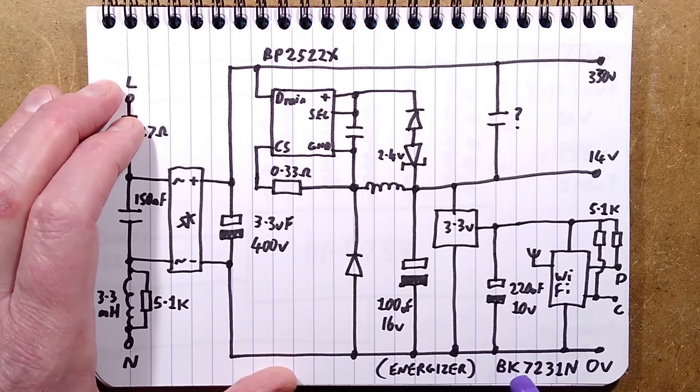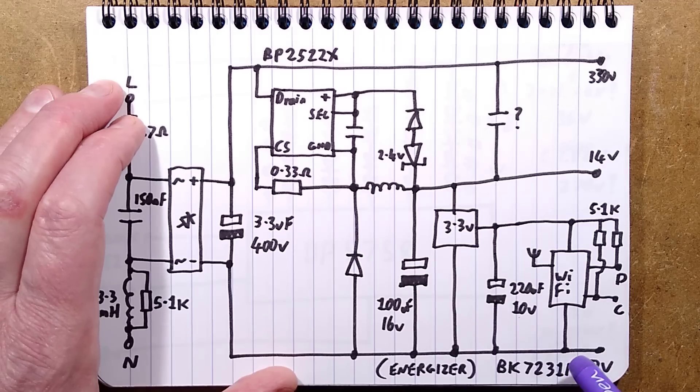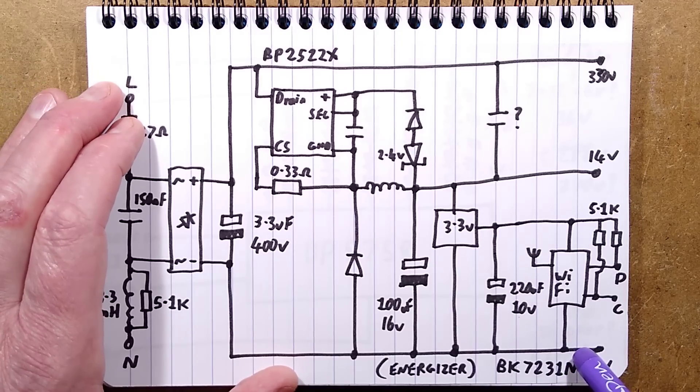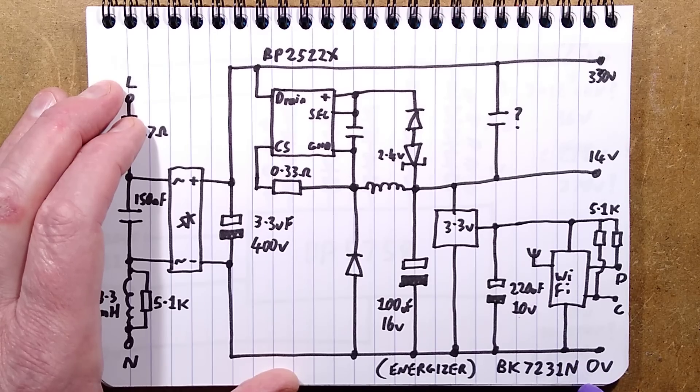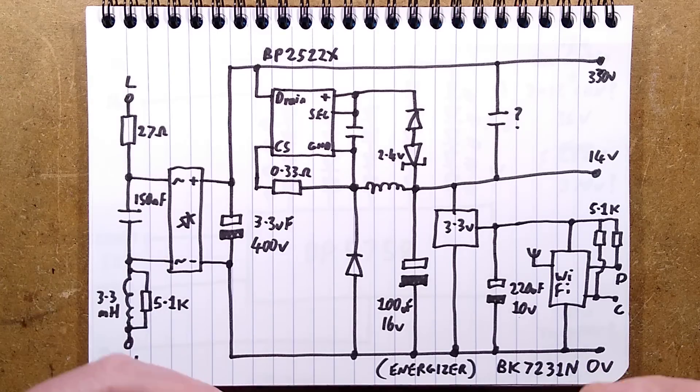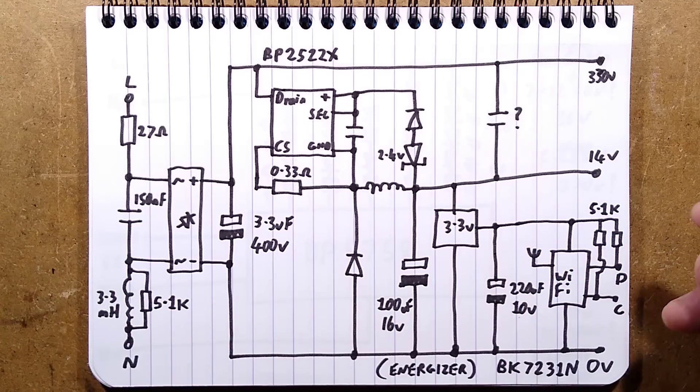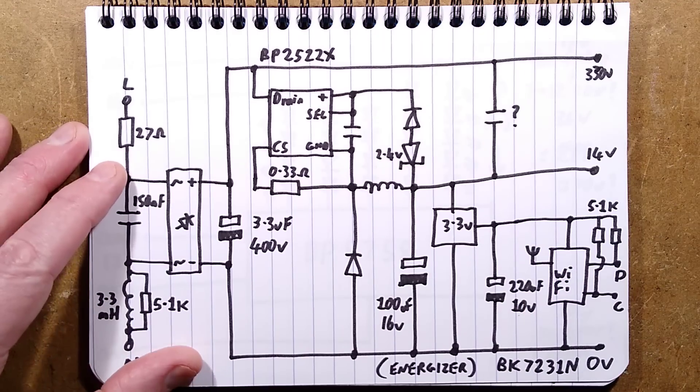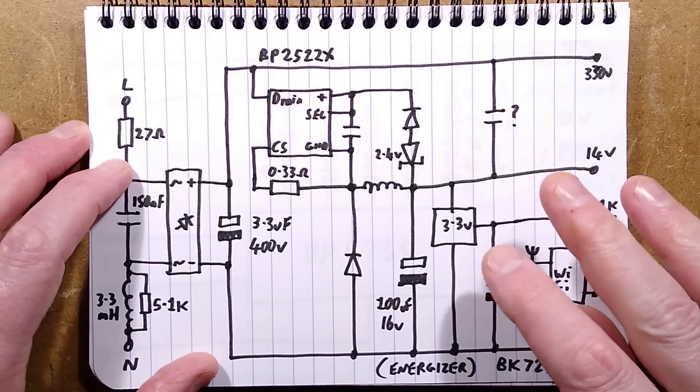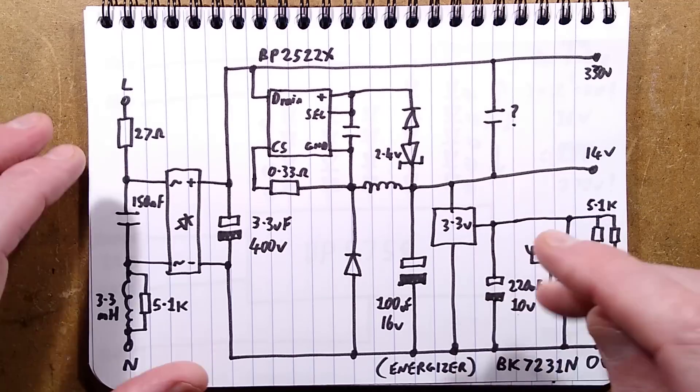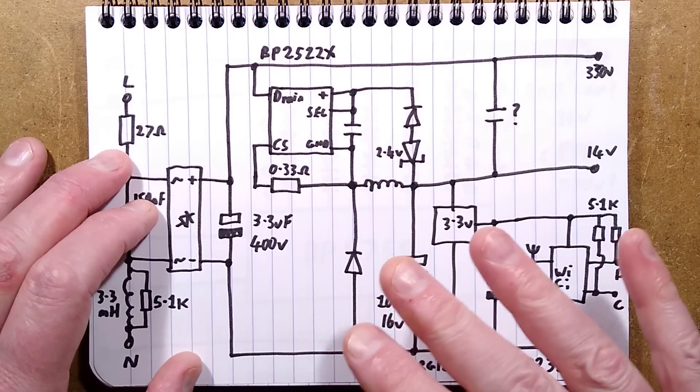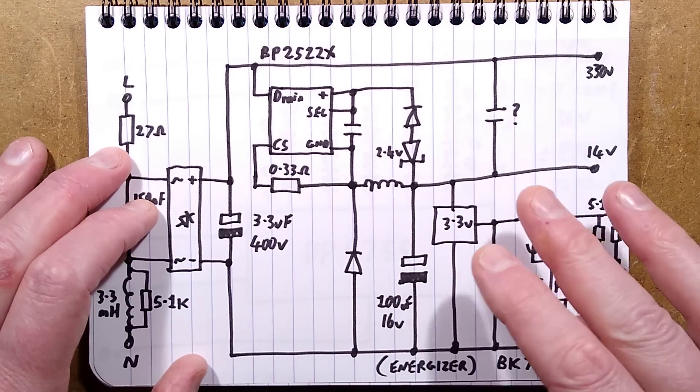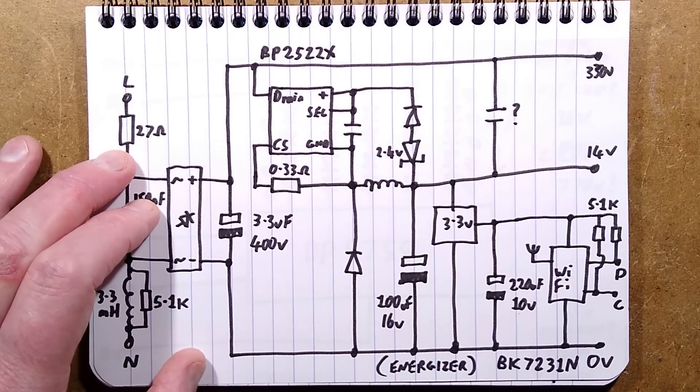The chip underneath is a BK7231N, and yes, theoretically you could, if you had the knowledge, flash it with open source firmware for Wi-Fi control that didn't involve sending your email address and other stuff to this company. You'll notice I didn't demonstrate this running - I didn't connect it and load apps onto the phone. I'm just not into the Internet of Things. I just don't think it's very secure, it's a novelty.